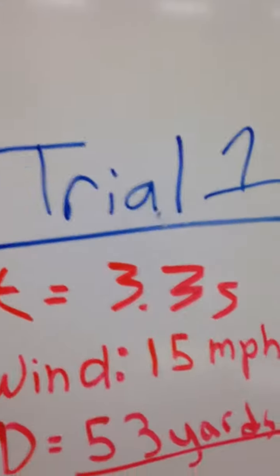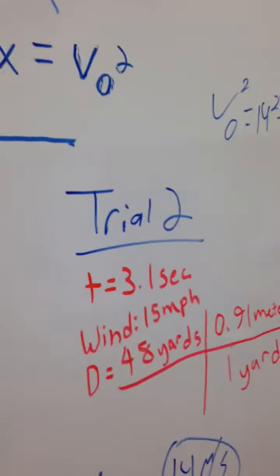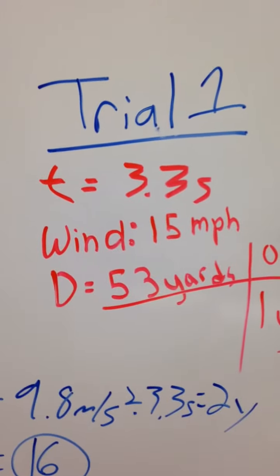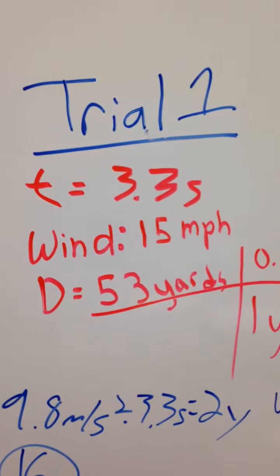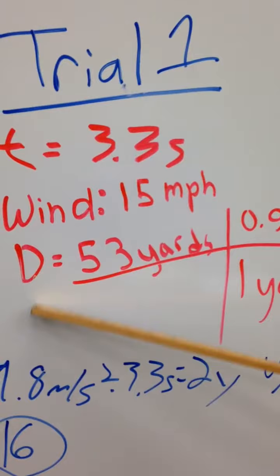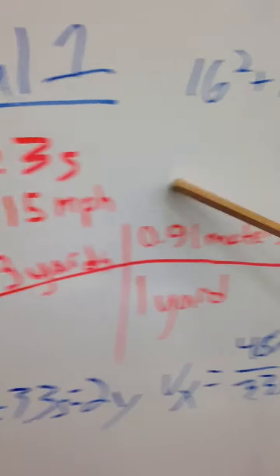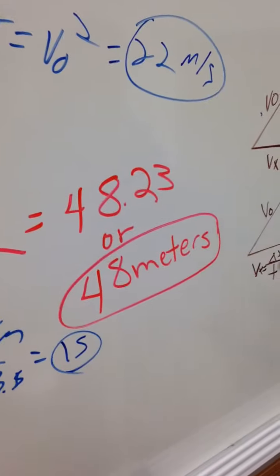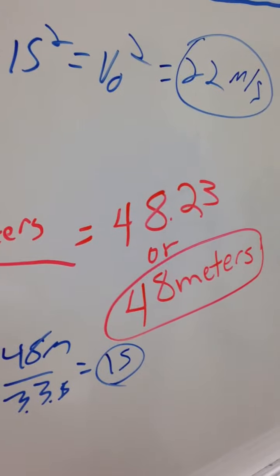We took two trials. Trial 1: Time equals 3.3 seconds. Wind was about 15 miles per hour, but we didn't necessarily take that into too much account. Distance, 53 yards. Conversion, you got 48 meters with significant figures.